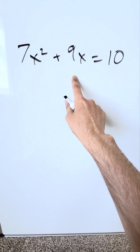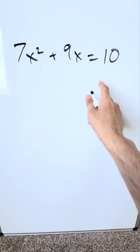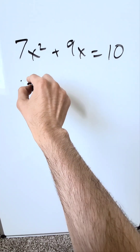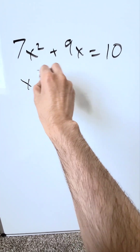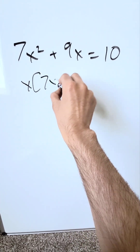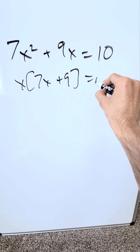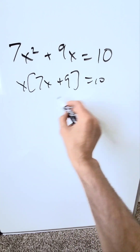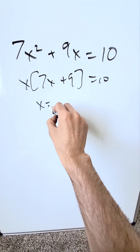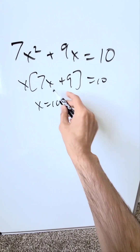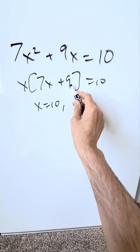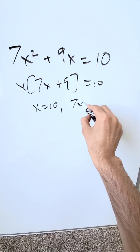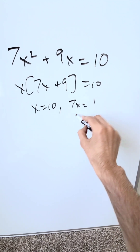We have 7x squared plus 9x equals 10. The incorrect approach is to isolate x by splitting the equation — writing 7x plus 9 equals 10 and solving for x independently. That gives x equals 10 from one part.